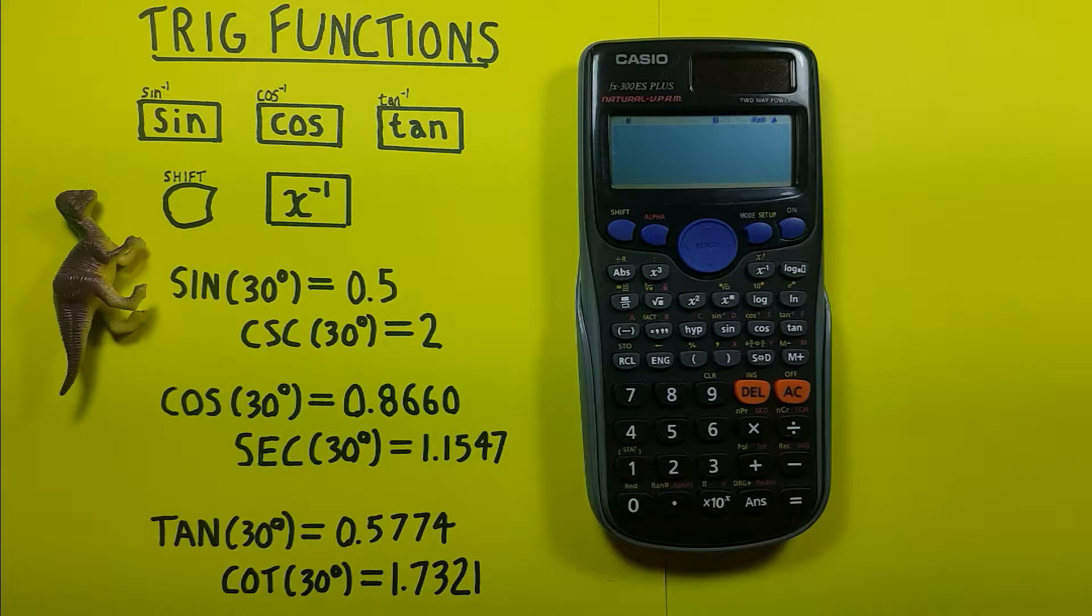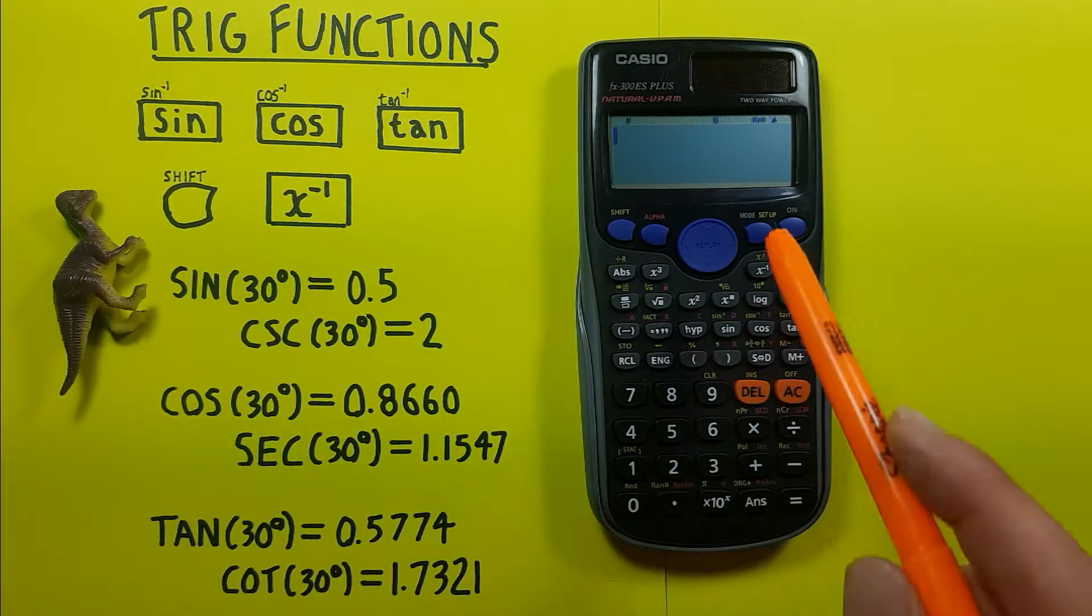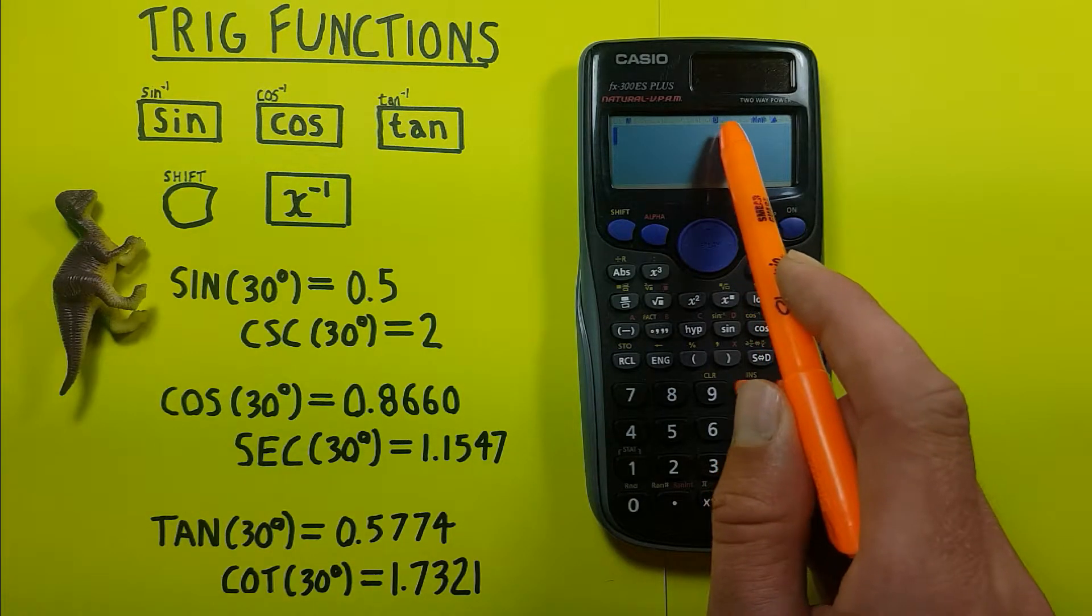Now all examples we'll be doing will be using degrees, so first thing we want to do is set our calculator to degrees mode. We can tell it's in degrees mode if we see a D up here on the top of the screen.